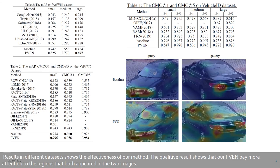Results on different datasets show the effectiveness of our method. The qualitative results show that our P1 pays more attention to the regions that are present in both of the two compared images.